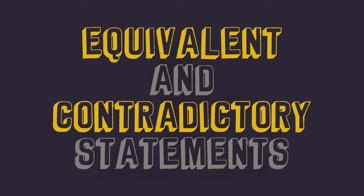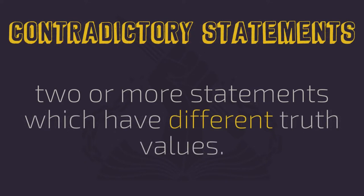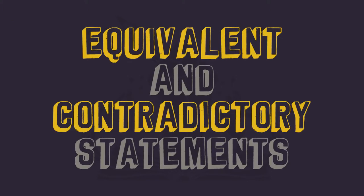Next, we are going to look at logically equivalent and logically contradictory statements. This is similar to what we've just talked about, but it is distinct. An equivalent set of statements consists of two or more statements that have the same truth values. This is in contradistinction with a contradictory set of statements, which are two or more statements that have different truth values and so cannot both be true at the same time. Here we are concerned with the matching truth values of the statements involved, not whether all of the statements can be true at the same time — a slight distinction, but an important one.